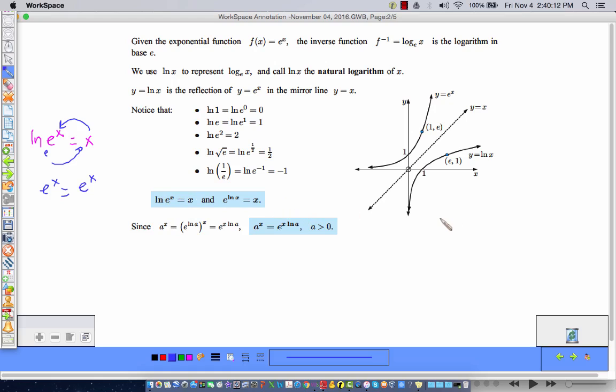And this one, E to the natural log of X is equal to X. So this is an exponential form. So if I put it in logarithmic form and say the log base E of X is equal to the natural log of X. See? See how that works? It's just the log base E of X is the natural log of X as stated right up here.